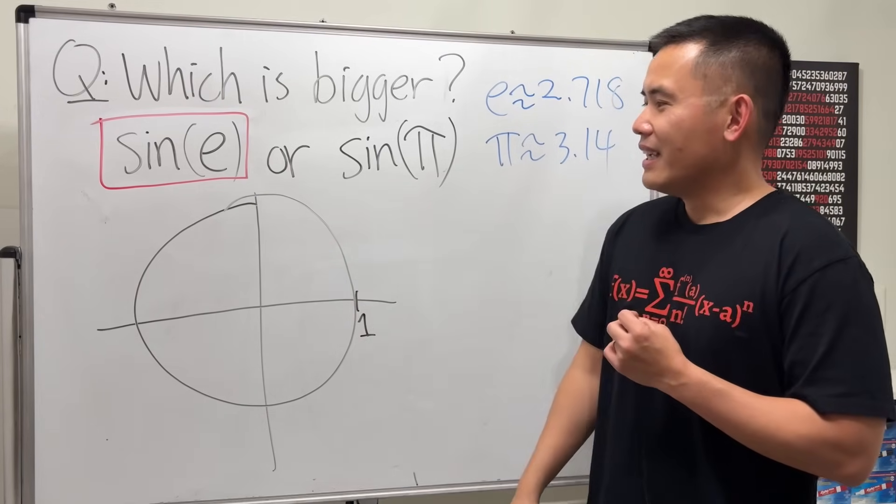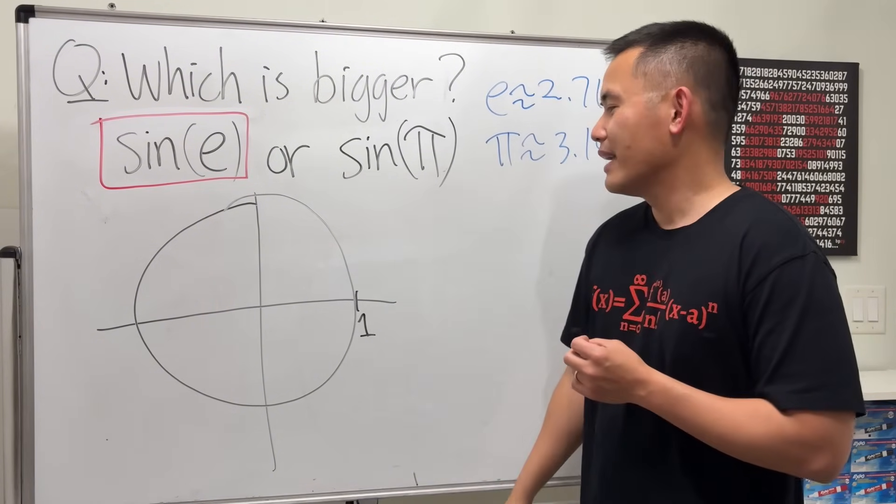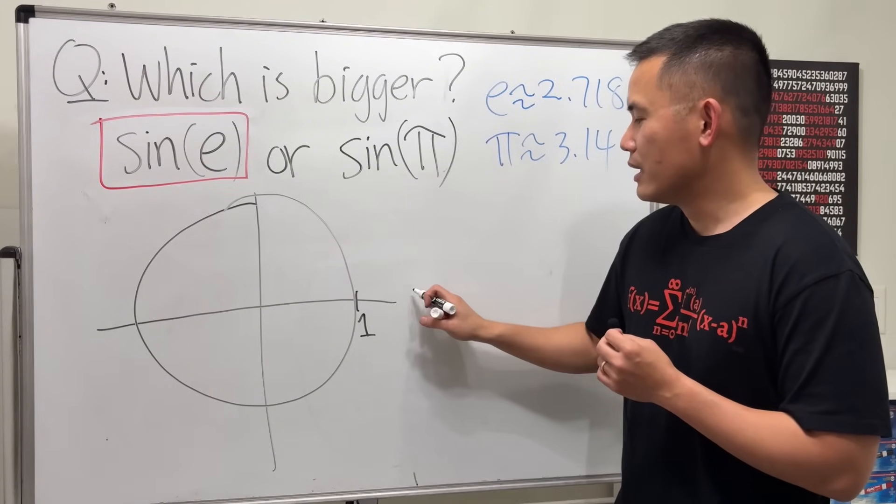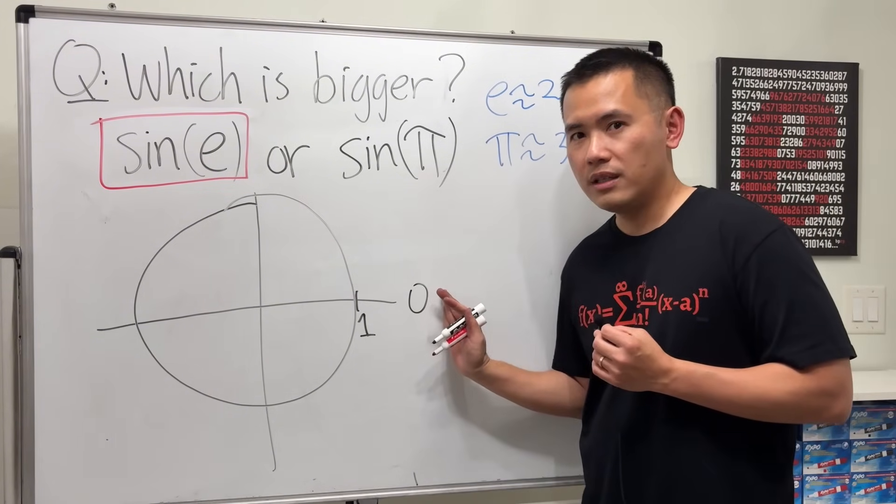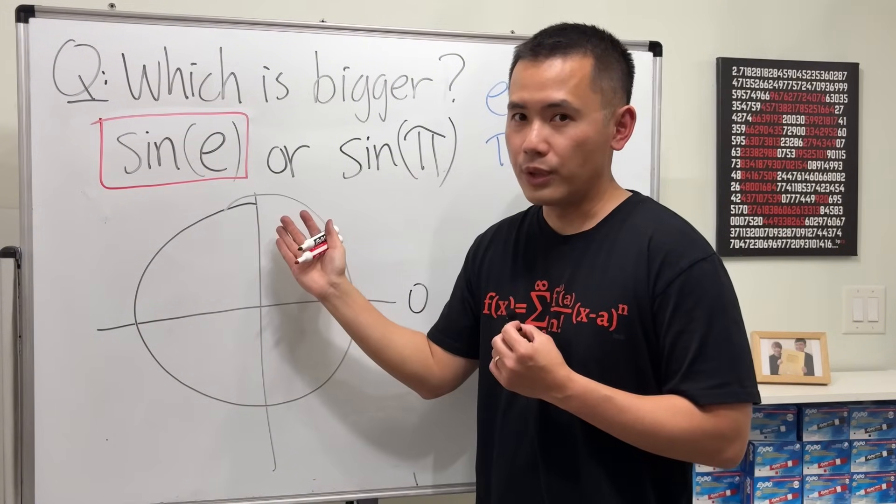And on the unit circle, sine is the y-value. And remember, this is how we measure: here we have 0 radians, it's the same as 0 degrees. Right here is 90 degrees or π/2 radians.